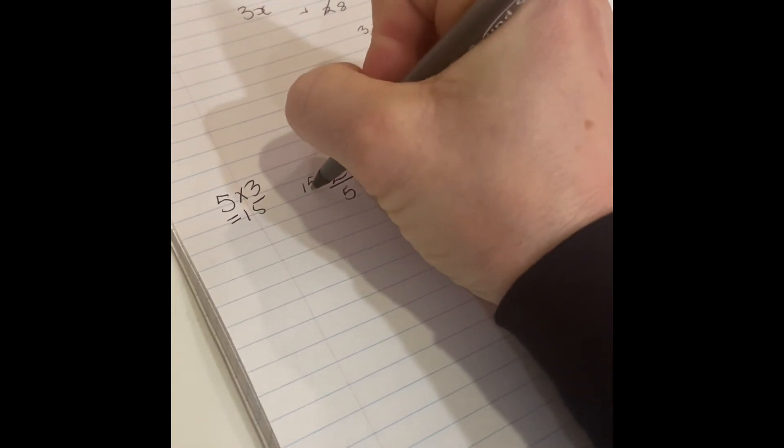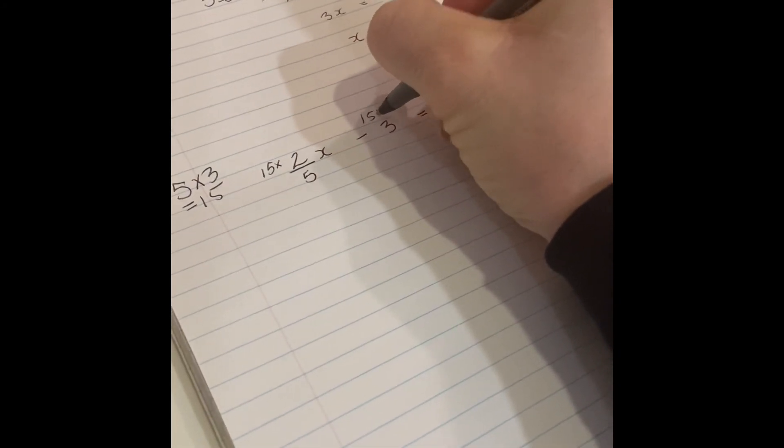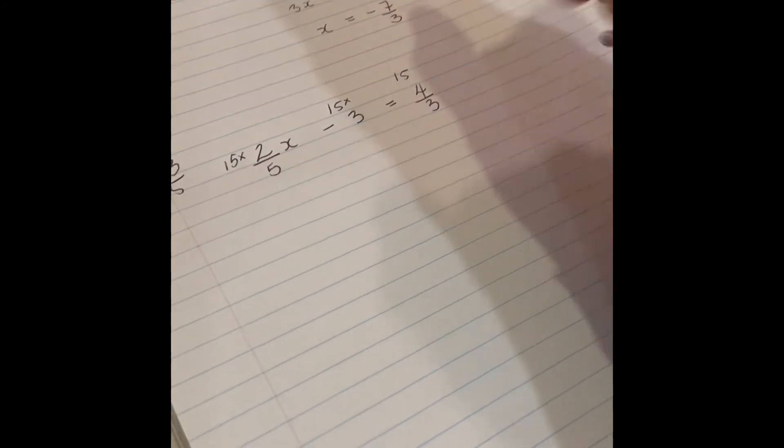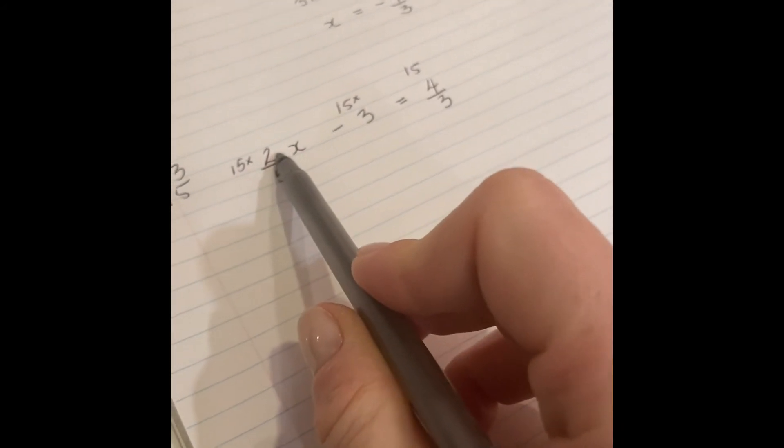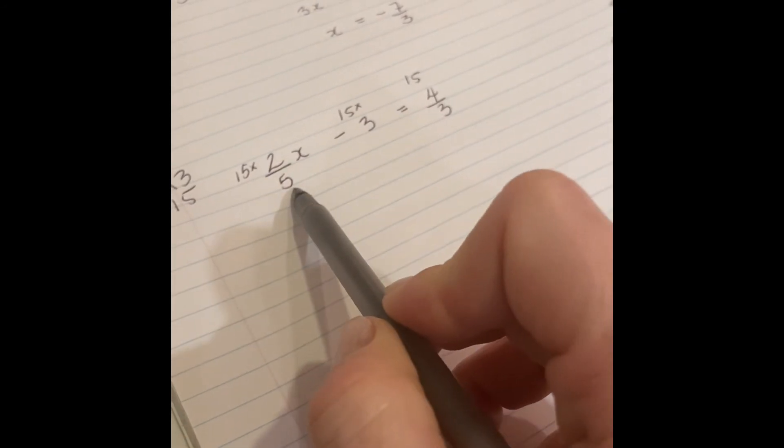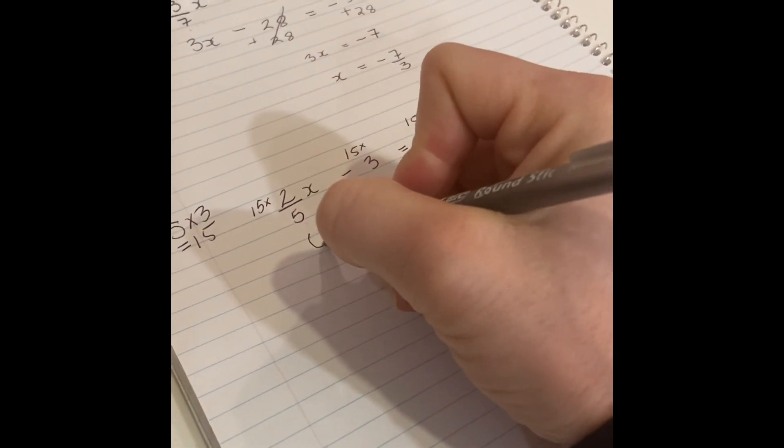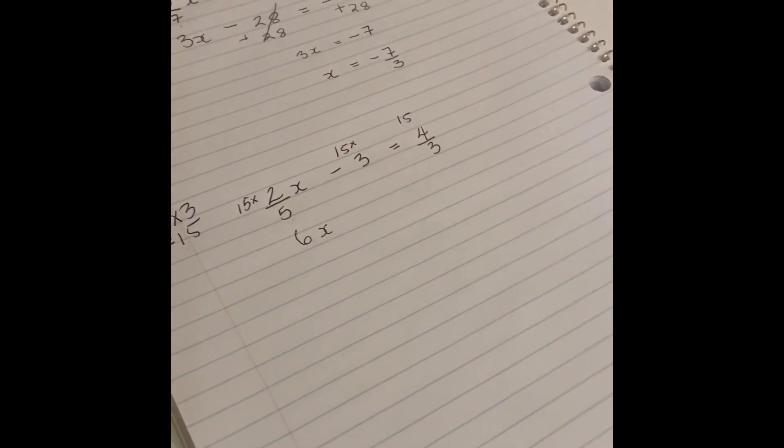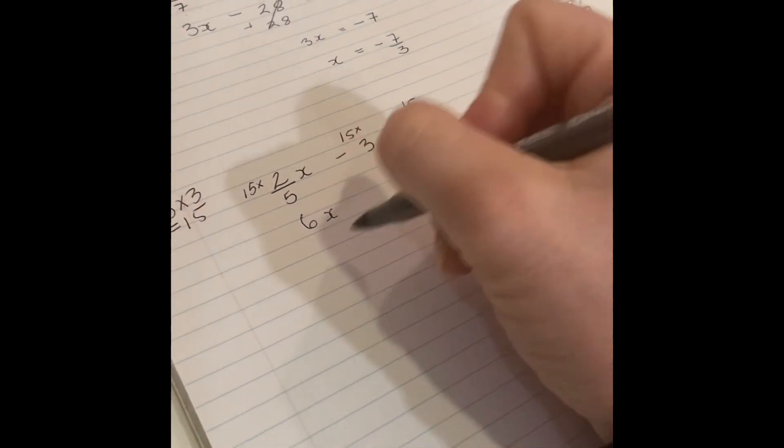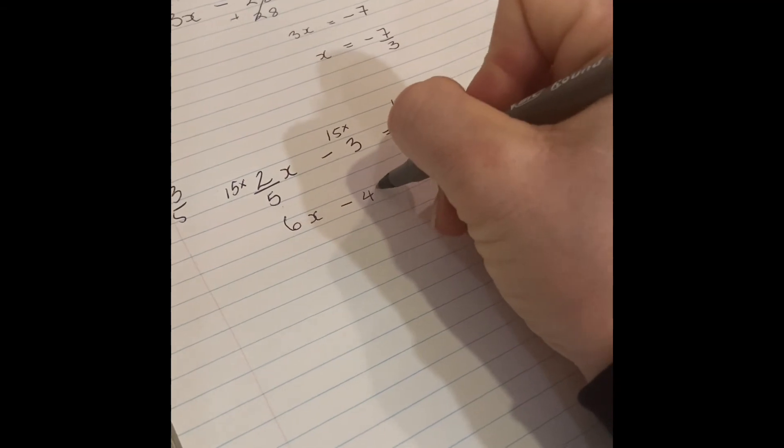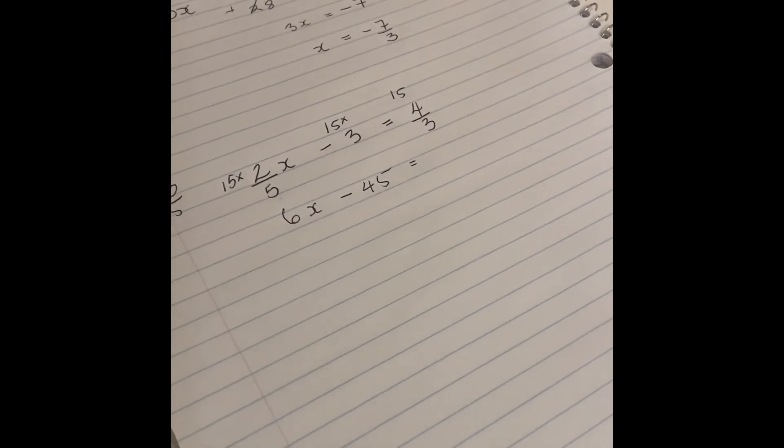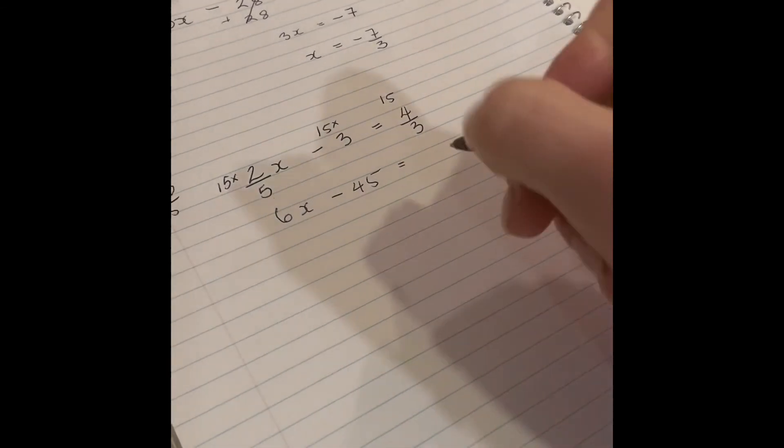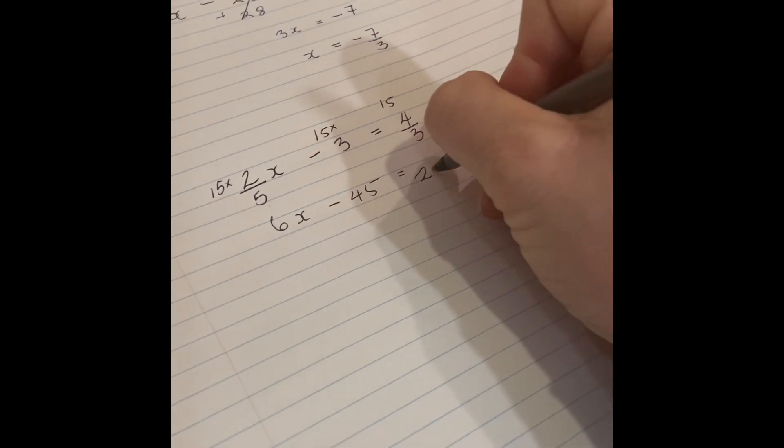And all I'm going to do is I'm going to multiply all the parts by 15. I'm going to multiply this by 15, I'm going to multiply this by 15, and I'm going to multiply this by 15. So just to confirm that this is working, 15 times 2 is 30, 30 divided by 5 is 6, so that's a nice number with no fractions, so the 5 has gone. And then minus 15 times 3 which is going to be minus 45, and lastly 15 times 4 is 60, 60 divided by 3 is going to be 20. And suddenly I have no more fractions in my problem.